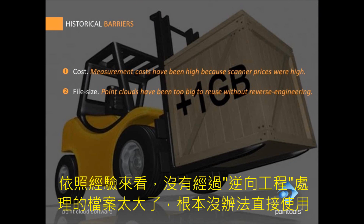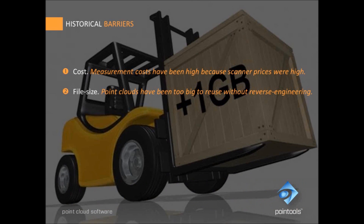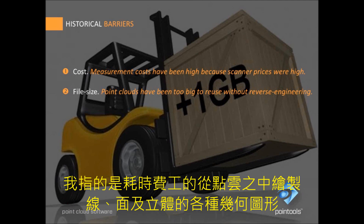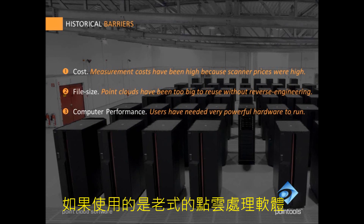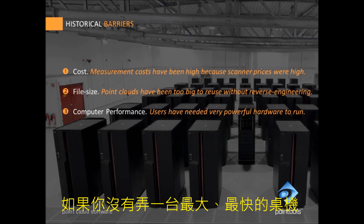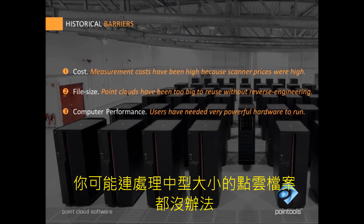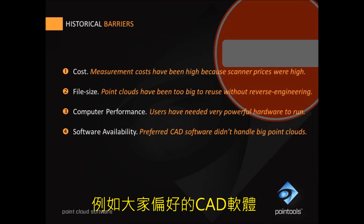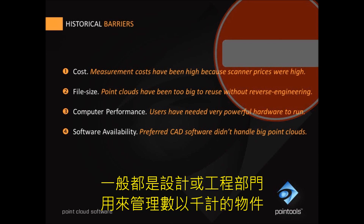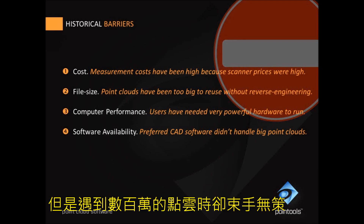Another barrier is file size. Historically, point clouds have been just too big to reuse without reverse engineering — that is, the time-consuming and costly process of extracting regular line, surface and solid geometry from the point cloud. Computer performance has also been a barrier; without the biggest, fastest computer on your desktop, you had little to no chance of working with even a medium-sized point cloud. The last big barrier has been software availability: the preferred CAD software used in design and engineering offices was designed to handle thousands of entities, never millions of points.